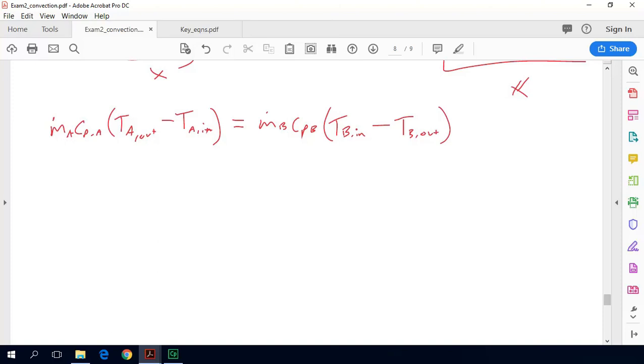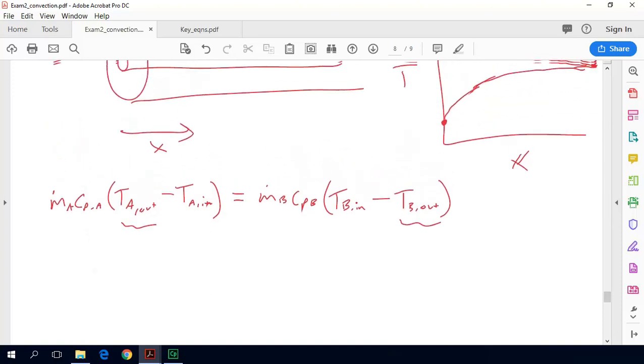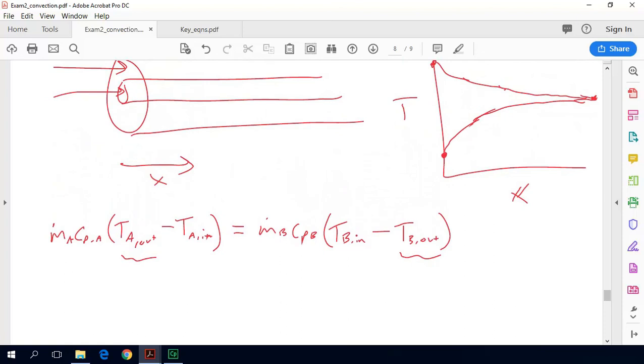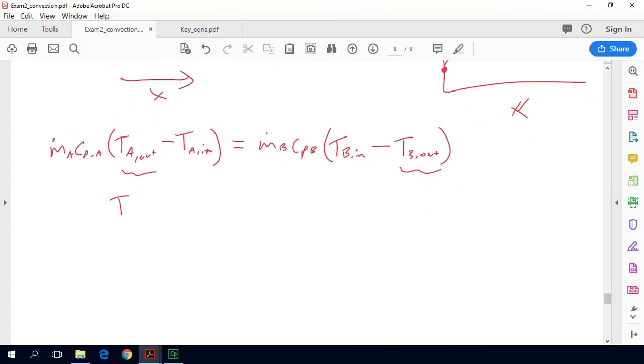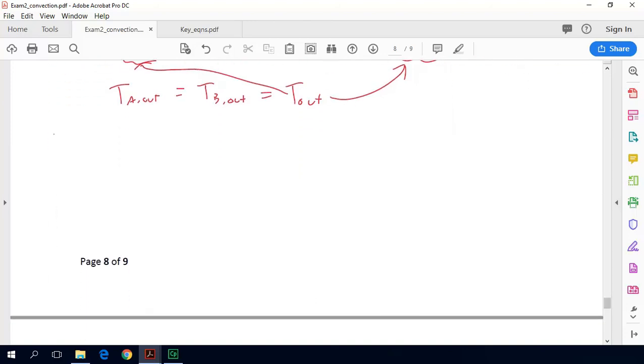So what's unknown is T A out and T B out. Those are unknown unless we use this assumption of a very long heat exchanger, where we can say that T A out is equal to T B out. And we can just call that T out. So this effectively gives us a second equation where we can just substitute in T out both places. Now we have one equation, one unknown, and we can just solve algebraically this whole relationship.